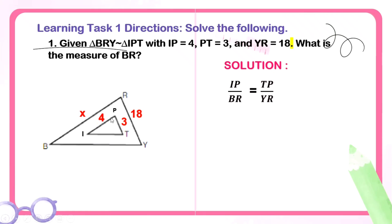We can find the ratio of the corresponding sides of our triangles. We can say that segment IP over segment BR is equal to segment TP over YR. Let's substitute the values into our equation. IP is 4, BR is x, so 4 over x equals segment TP, which is 3, and YR is 18. Then, to get the value of x, just cross-multiply. 4 times 18, then x times 3.